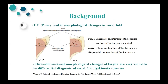We know unilateral vocal fold paralysis may lead to morphological changes in the vocal fold, as shown in Figure 1. The left shows us the morphology of the vocal fold resulting from contraction of the cricothyroid muscle — it is the affected side of unilateral vocal fold paralysis. The right shows us the morphology of the vocal fold with contraction of the posterior cricoarytenoid muscle — it is the healthy side. So three-dimensional morphological changes of the larynx are very valuable for differential diagnosis of vocal fold dysfunction.